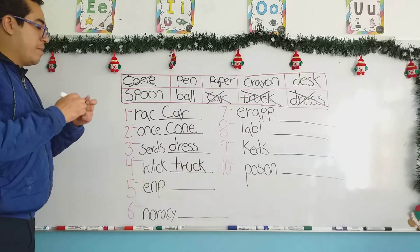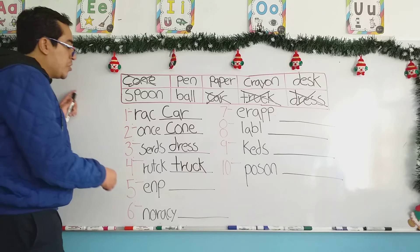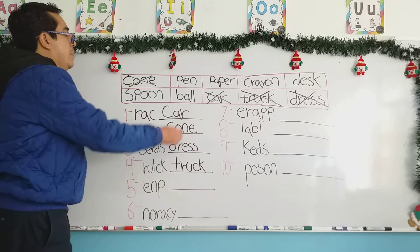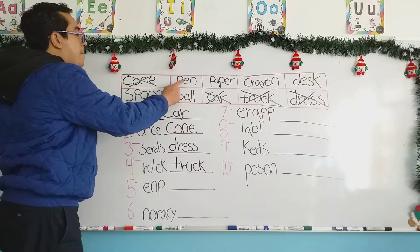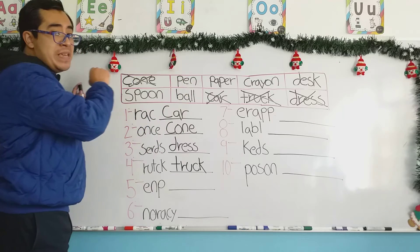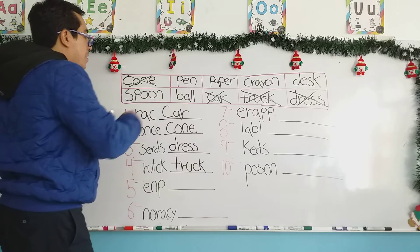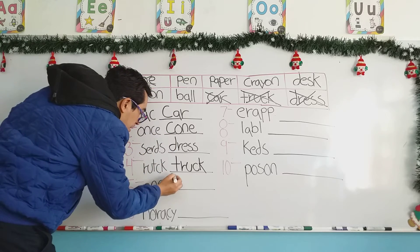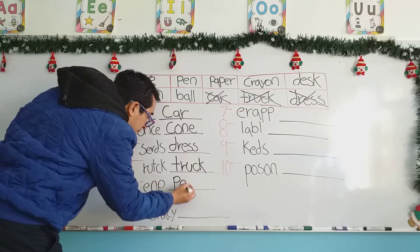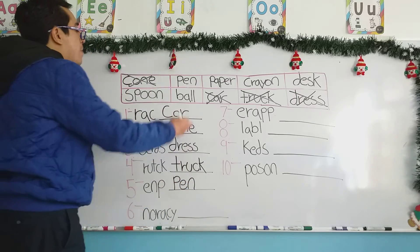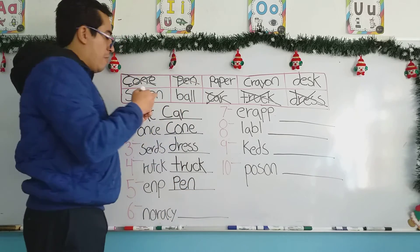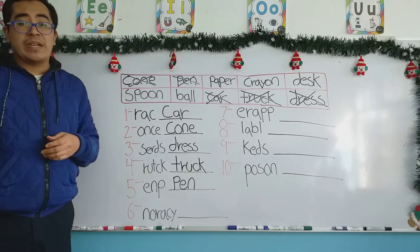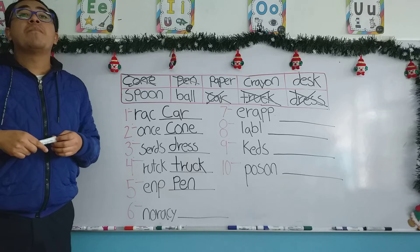We continue with number five. The letters are E and P. It's right here — very easy to locate it. The word is pen. We mark it with an X. Remember, pen belongs to the school objects. In Spanish, pluma.